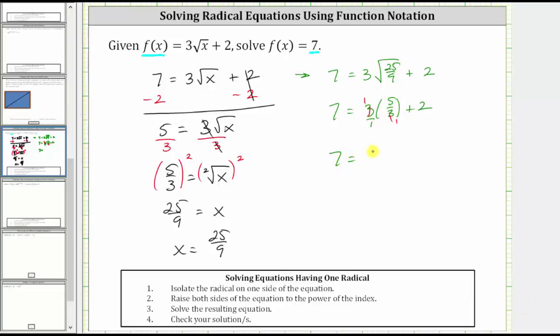Giving us seven equals five plus two, and five plus two is seven, which does verify the solution is correct.